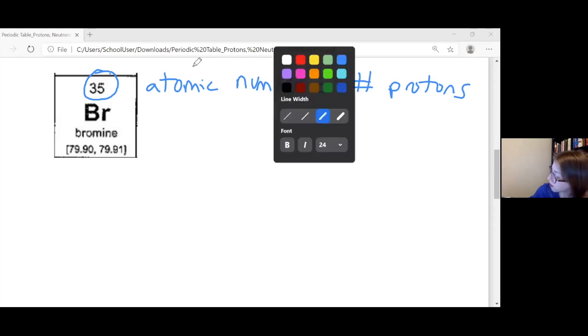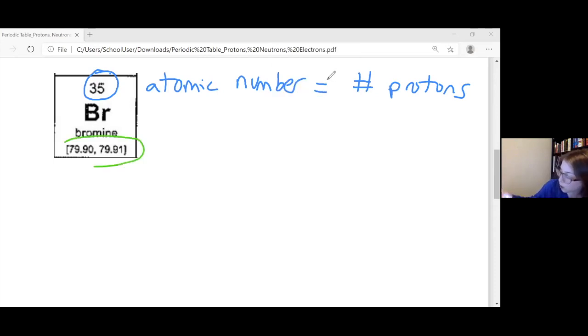The number on the bottom, we've worked with a bunch, is the atomic mass. We call it molecular weight sometimes too. The atomic mass is comprised of the number of protons and the number of neutrons. So it turns out I'm going to say number of p and number of n, protons and neutrons. Protons and neutrons both have a relative mass of one, meaning they have the same mass as each other.